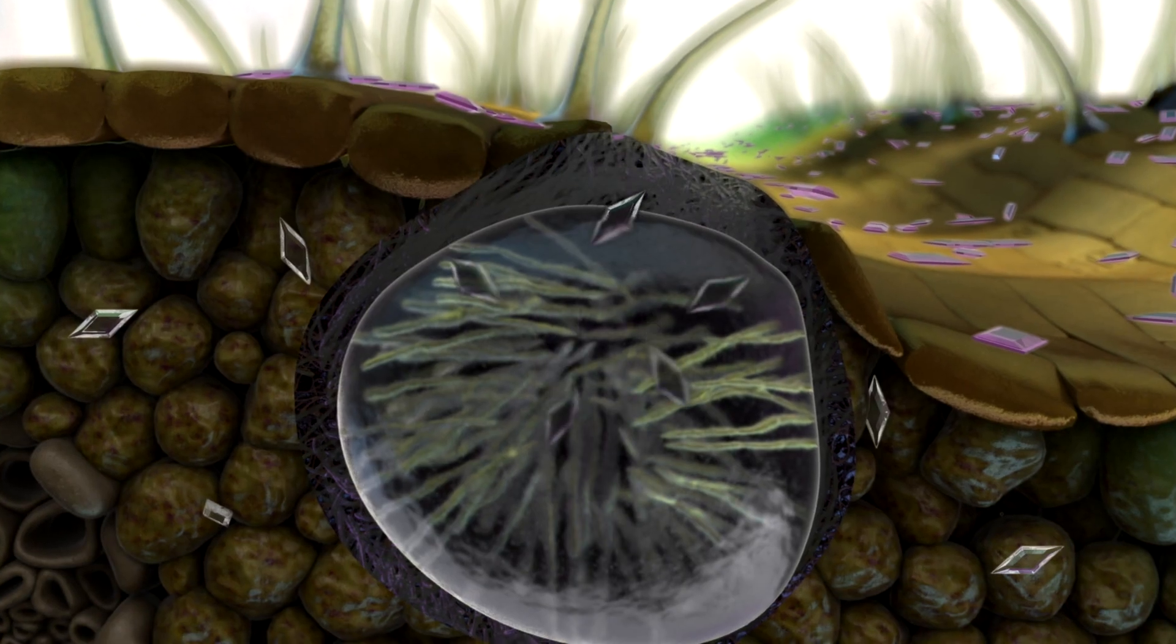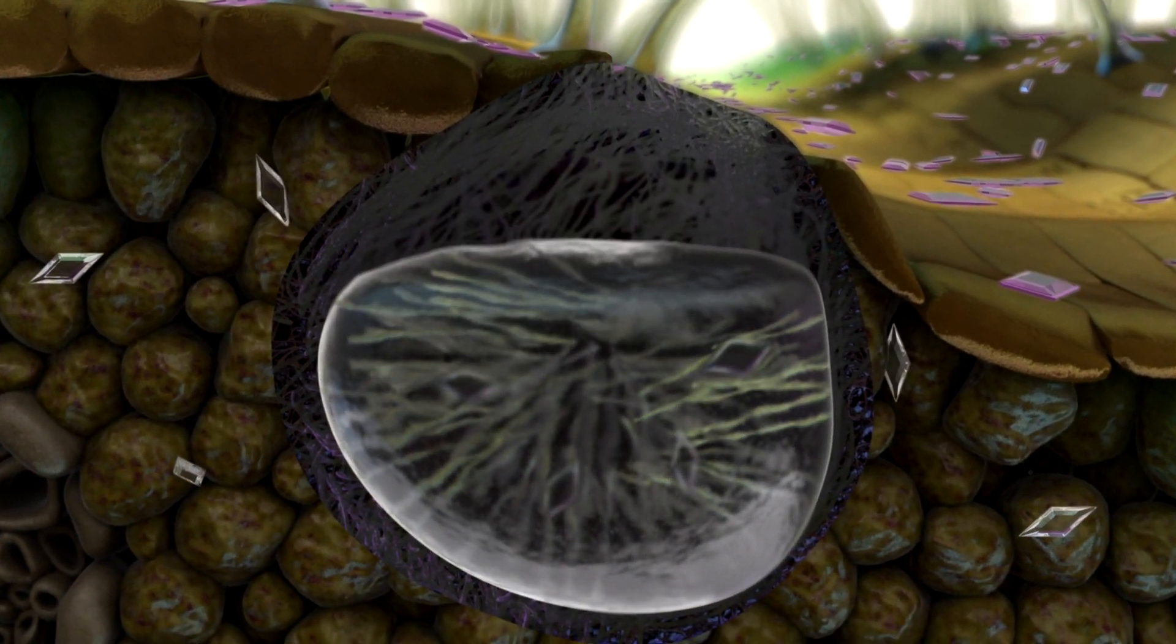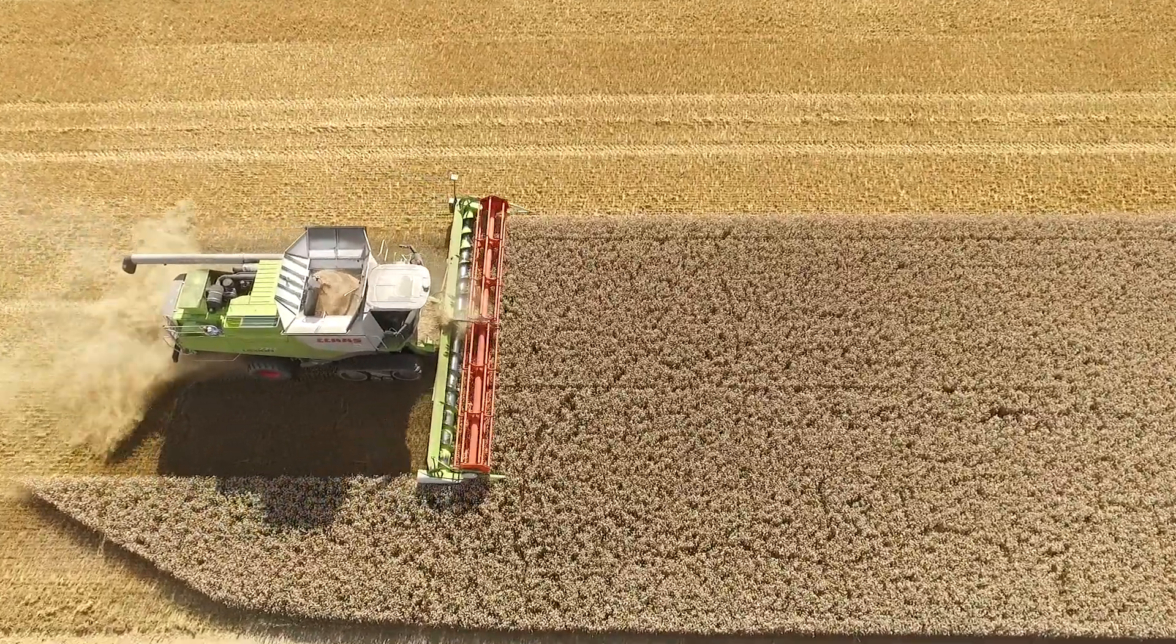Innotrek also inhibits the maturation of the fruiting bodies and is able to kill produced spores, another important attribute toward breaking down Septoria disease epidemics.